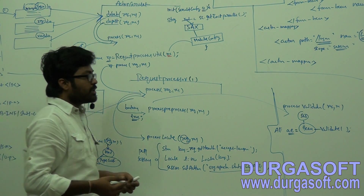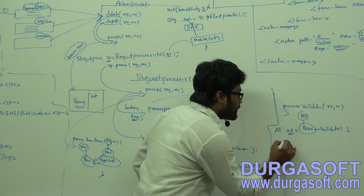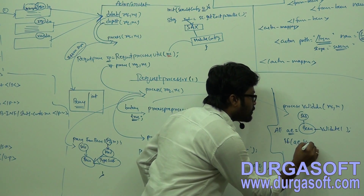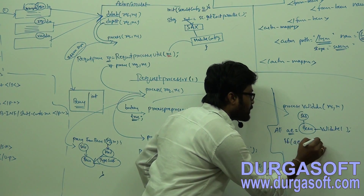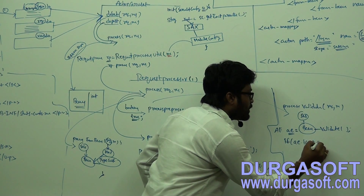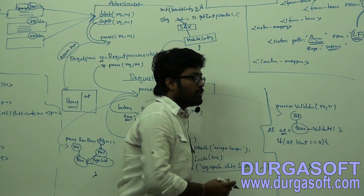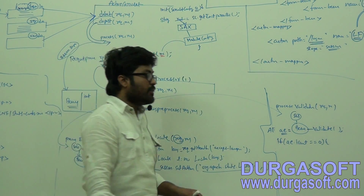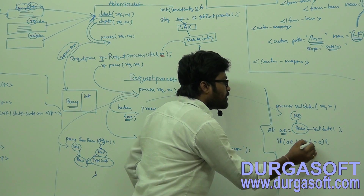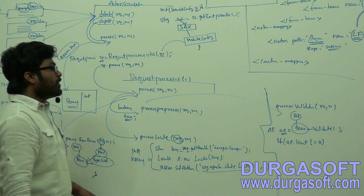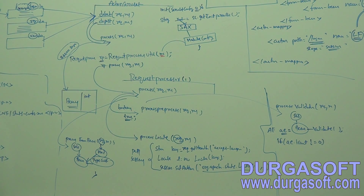After getting that ActionErrors object, what will it do? It will count those action errors. There is one variable icount - it will call this icount. If this icount is equal to 0, that means no error. If it is not equal to 0, there are some errors. So what does it do if it finds any errors? It needs to forward those errors to the same input page.